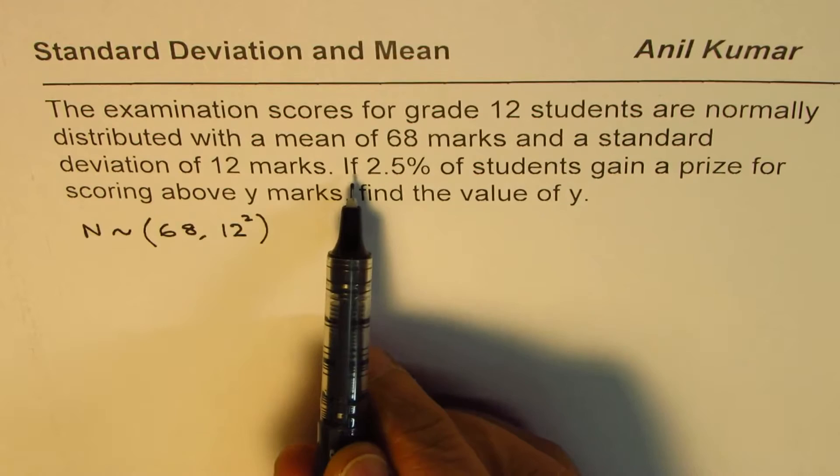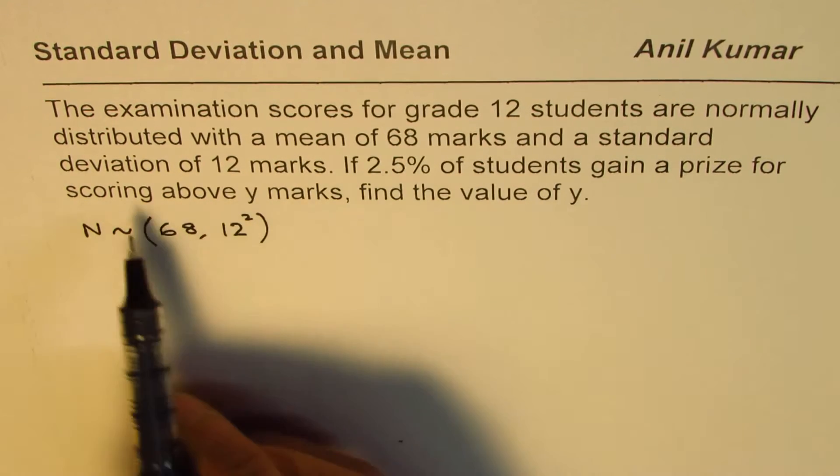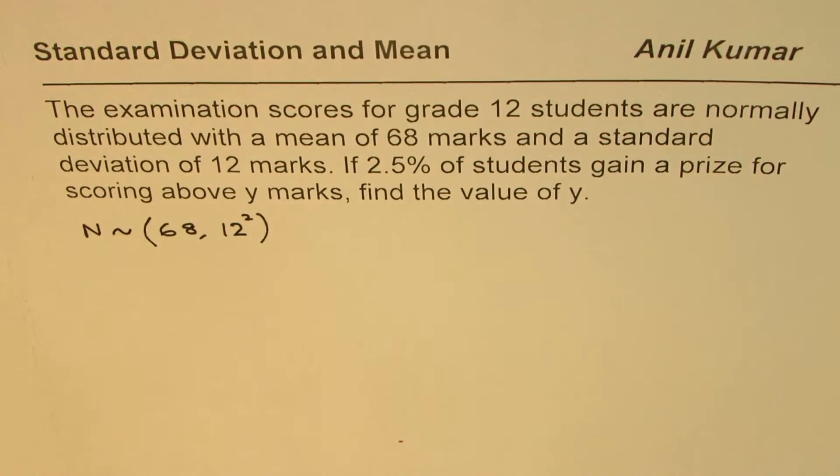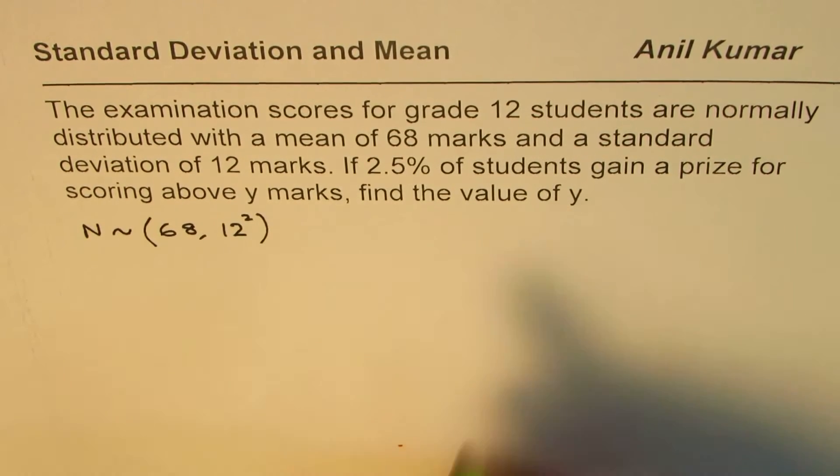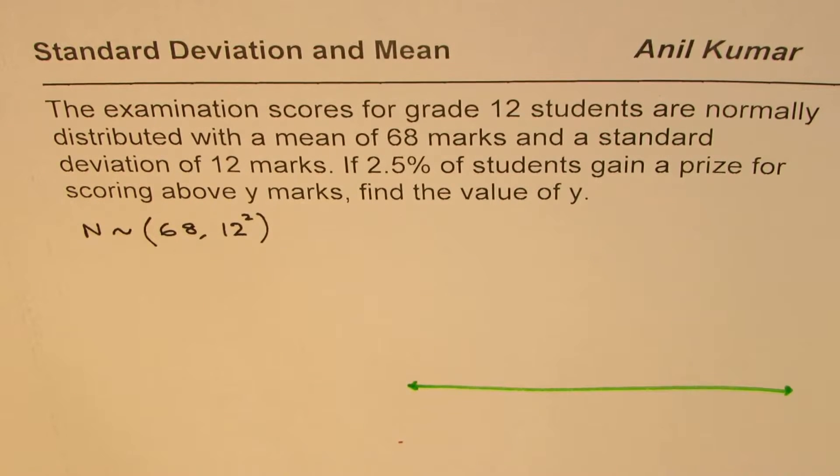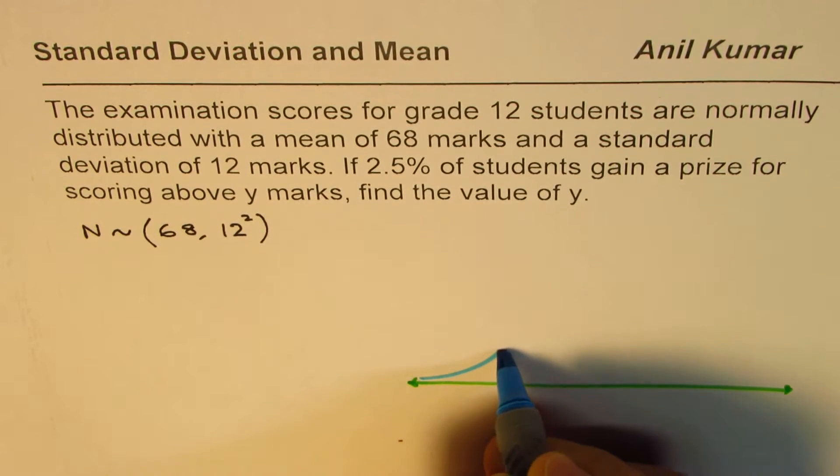The question says if 2.5% of students gain a prize for scoring above y marks, find the value of y. What does it mean? When we say that we're talking about a normal distribution, that means we are considering a bell graph which is kind of like this.